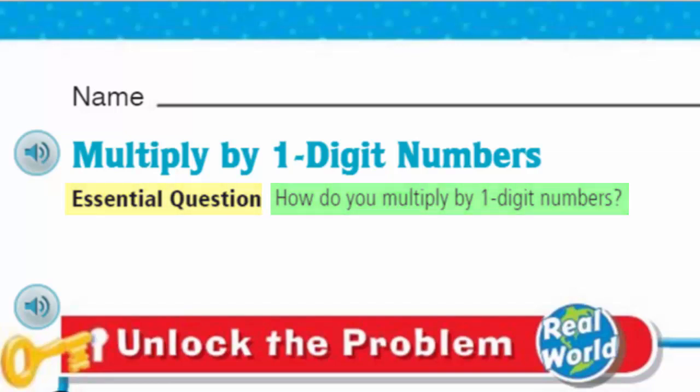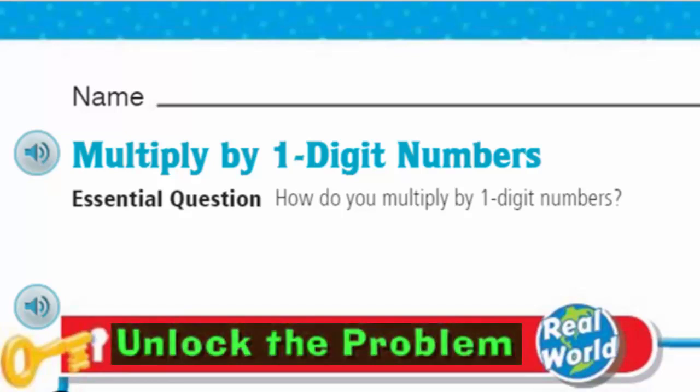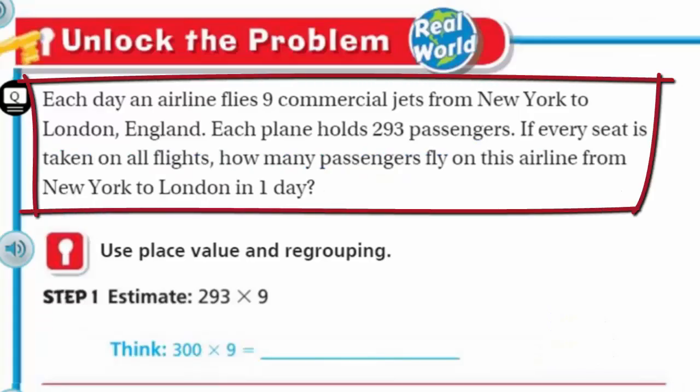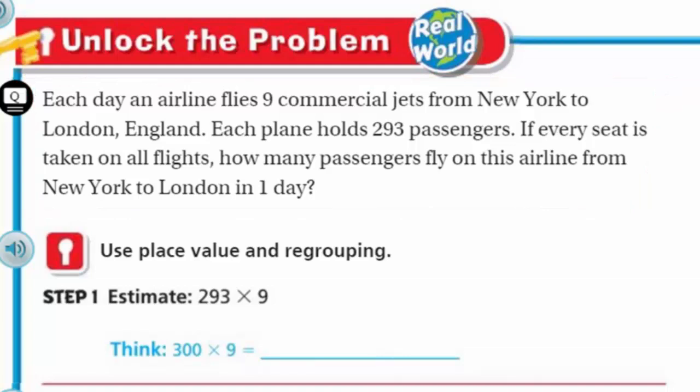But of course, we can't do any of that unless we unlock the problem. That's right, my friends, because it's real-world, baby! Real-world! It states: each day, an airline flies nine commercial jets from New York to London, England. Each plane holds 293 passengers. If every seat is taken on all flights, how many passengers fly on this airline from New York to London in one day? Wow, that is real-world, my friends!